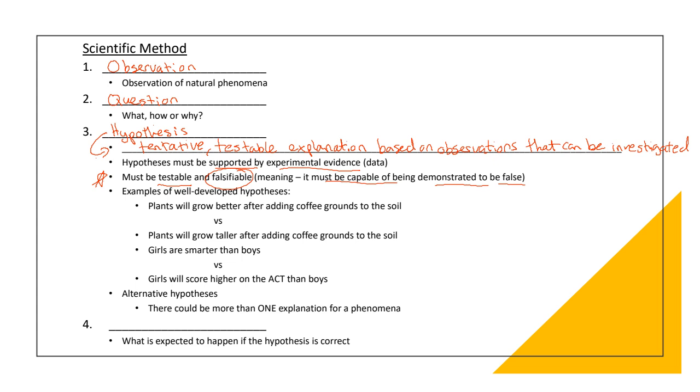I have a couple of examples here of hypotheses. I'm going to put here one and number two. Here's two hypotheses. One is kind of a good hypothesis, and the other one is a bad hypothesis. For example, plants will grow better after adding coffee grounds to the soil. I'm going to say this is going to be a bad hypothesis. Why?